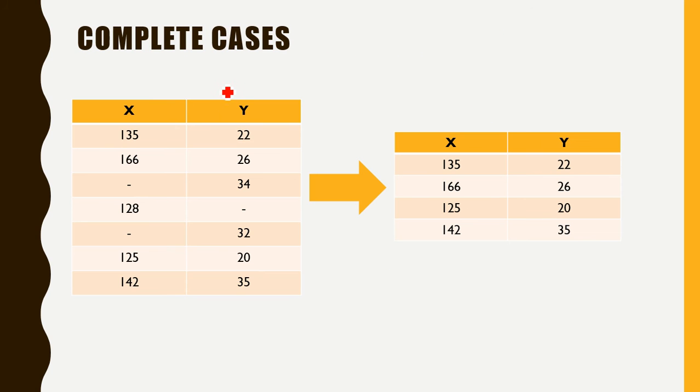One of the easiest ways of dealing with missing values when present in the data is to take only those cases that are actually complete. For example, by a complete case we mean that all the values in one particular case are filled up. Now for your information, each of the rows in the dataset is called an observation or a case.